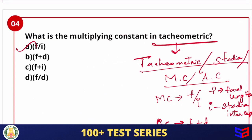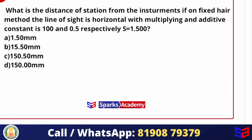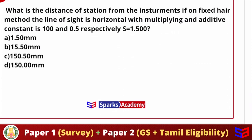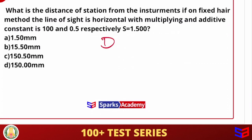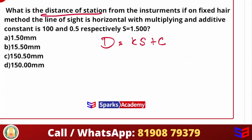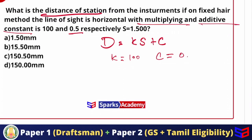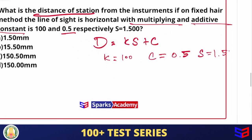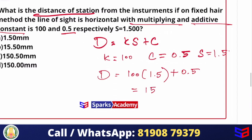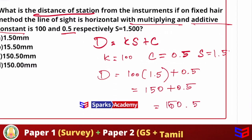The answer for the multiplying constant is f/i. Next question: what is the distance of the station from the instrument using the fixed hair method, where the line of sight is horizontal, multiplying constant k is 100, additive constant c is 0.5, and staff intercept s is 1.5? Using D = Ks + C: D = 100 × 1.5 + 0.5 = 150 + 0.5 = 150.5. The answer is option C.